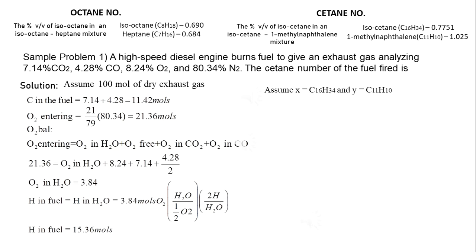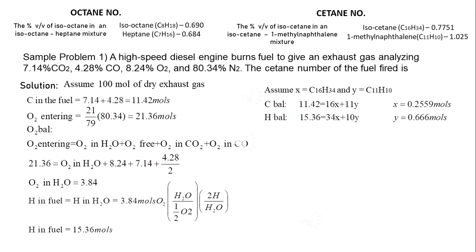Assuming X is equal to moles of iso-cetane and Y equals moles of 1-methylnaphthalene, we have 0.2559 moles of iso-cetane and 0.666 moles of 1-methylnaphthalene.